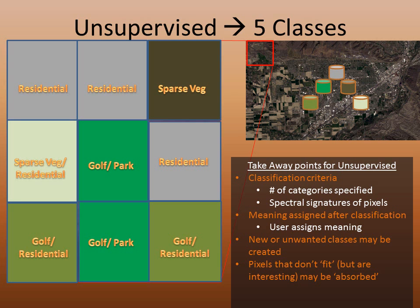In practice, it is typical to run multiple unsupervised classifications to test what number of classes is the best fit for the data you are interested in. For example, you could run an unsupervised workflow using two classes and a second using twelve classes. Two classes doesn't provide enough containers to effectively classify the different surface types, causing misclassification. Twelve classes has too many bins, and pixels get inappropriately classified as well. After examining your results and experimenting with different numbers of classes, you can narrow down and arrive at an appropriate, best-fit number of classes.